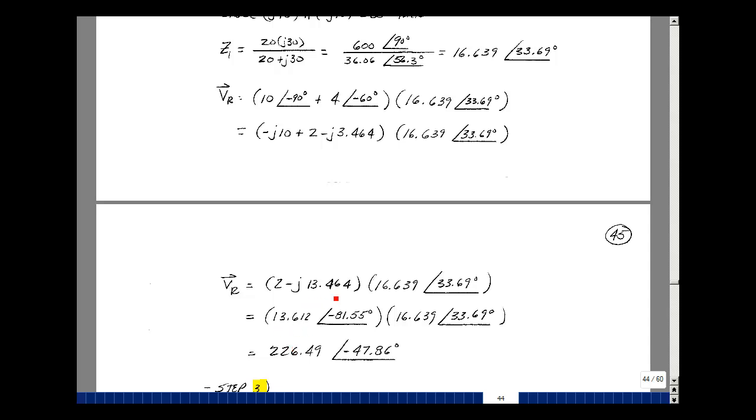The length here will be a little bit longer than this. And then the angle will be in the fourth quadrant, but close to minus 90 because this is so much smaller than this. That seems reasonable. So I'll multiply these two, and we'll add the angles. I get 226.49 and an angle of minus 47.86 degrees.